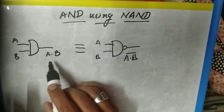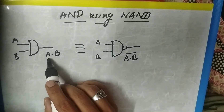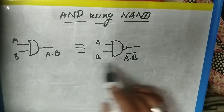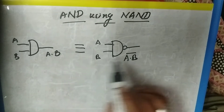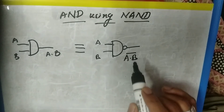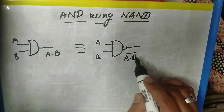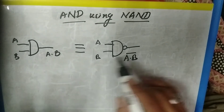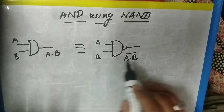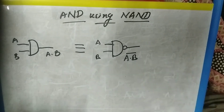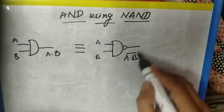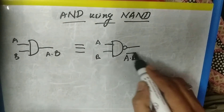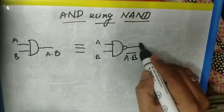As we know, if we compare this output and this output, there is only one difference — that is the bar difference. Here we have A dot B, and here we get A dot B bar.